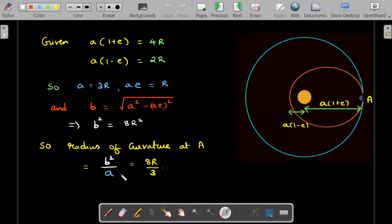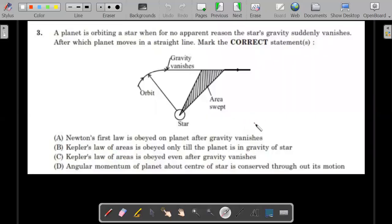Next, a planet is orbiting a star where for no apparent reason the star's gravity suddenly vanishes. After which planet moves in a straight line. Obvious, right, gravity is not there it will move along a straight line. Mark the correct statements. Newton's first law is obeyed on planet after gravity vanishes. Kepler's law of areas is obeyed only till the planet is in gravity of the star. Kepler's law of areas is obeyed even after gravity vanishes and angular momentum of planet about center of star is conserved throughout its motion. Pause right for one minute, nice very decent theory question and then you go ahead with the solution I'm going to provide.